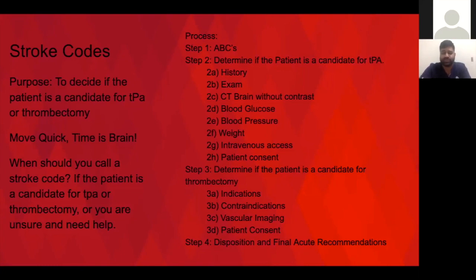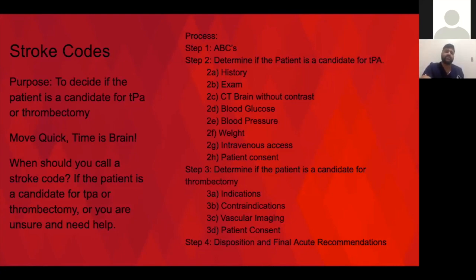The reason we have stroke codes for rapid assessment is because our therapies — TPA and thrombectomy — are time-dependent in terms of producing better outcomes the quicker we deliver them. We always move quickly whenever either is possible. If you think your patient is having a stroke but they're not a candidate for either of these, there's not really a reason to call a stroke code. You just need to move on to stroke workup and management.